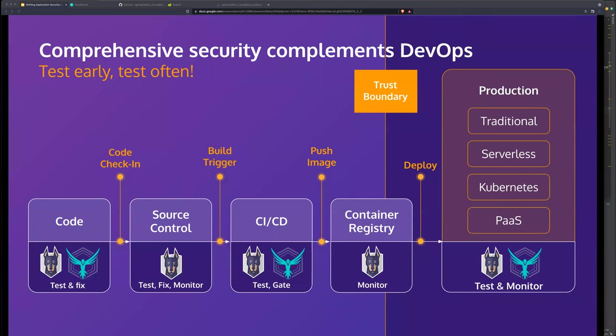Expanding into a linear view: you can do Snyk and StackHawk tests while writing code, while checking in code via source control and build triggers on PRs, and when pushing an image via container registry scanning — Snyk supports that too. Before crossing the trust boundary from pre-production to production, all your tests should pass. If they have, great — push to production and optionally test there too. If they haven't, now you can make an active decision about why you still want to push. That's the ability to shift application security left.